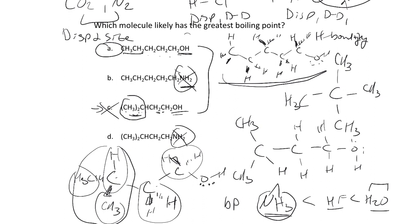The branching point in C weakens the force of attraction. So the weakest here — the one with probably the lowest boiling point — would be D, because we have the weaker nitrogen instead of oxygen, and then we have the branching point lowering that boiling point.